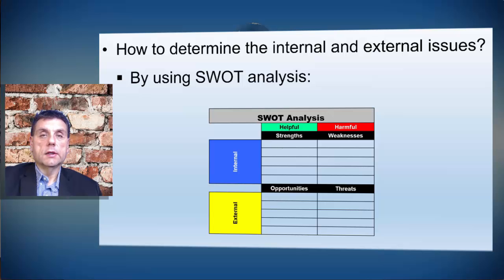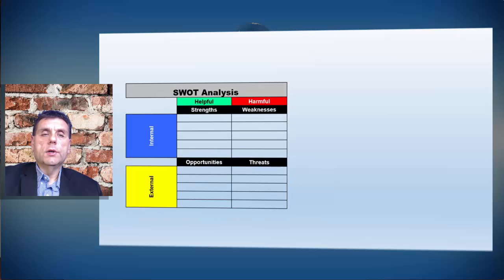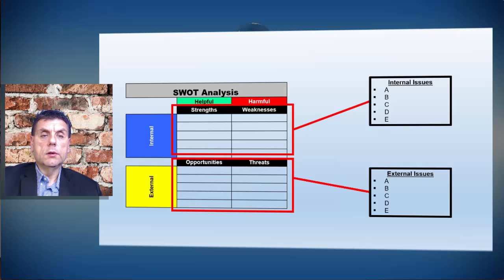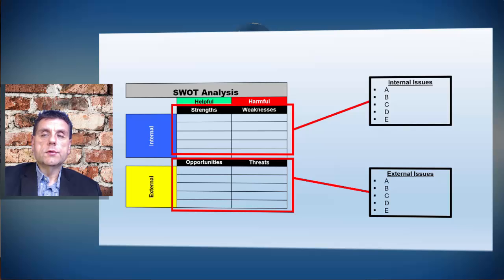Strengths and Opportunities are helpful, while Weaknesses and Threats are harmful. When we brainstorm possible Strengths, Weaknesses, Opportunities, and Threats, that helps us identify all internal and external issues related to our organization. This is what we need to do in order to properly address the context of our organization.